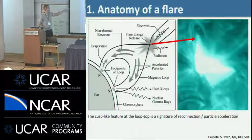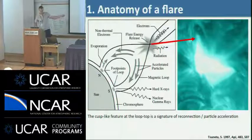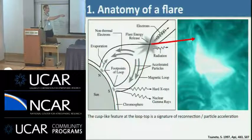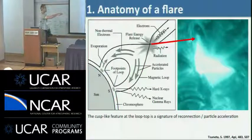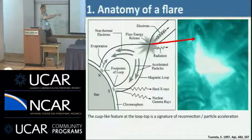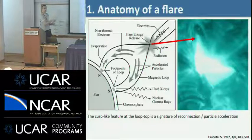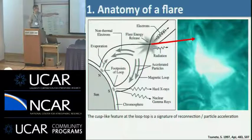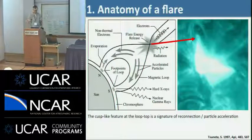There are non-thermal electrons involved. Presumably this cusp is a signature of a reconnection site. Beams of non-thermal electrons are accelerated and head down to the lower atmosphere — they heat and ablate material back up into magnetic structures, creating the post-flare loops we see. At the same time there's hard X-ray emission, and there's radio emission from up in the reconnection region.